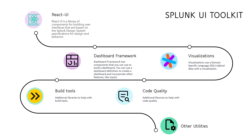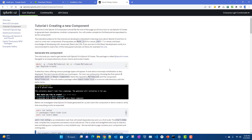Apart from the visualizations, Dashboard Framework, and React UI, the toolkit also comes with build tools, code quality check tools, unit test tools, and other utilities, which we will use in our demos. Today we will try to understand how to set this up in your local environment. I am using Windows — I will probably create another video for Linux-based systems as well, but the approach will be the same. The basic things you need are Node.js and Yarn.